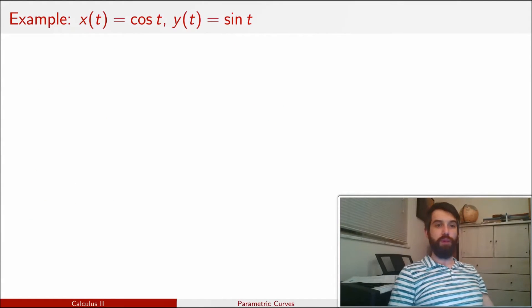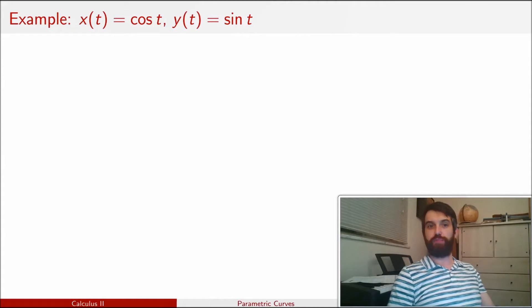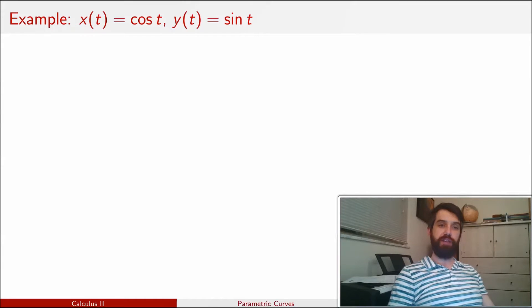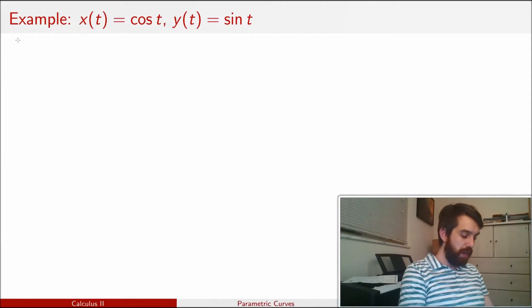In this first example, both x and y have been given as some function of this parameter t. x of t is cos of t, and y of t is sin of t. So let's try to graph this, let's try to see what this curve is going to look like. I'm going to begin by just computing a bunch of different points and see if I can interpolate what the curve is going to look like.